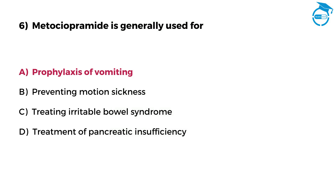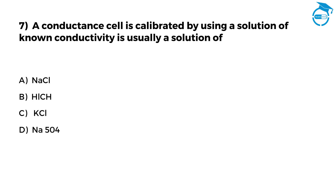Few more questions left. Let's move ahead and take the challenge. A conductance cell is calibrated by using a solution of known conductivity, usually a solution of. Option A, NaCl. Option B, HLCh. Option C, KCl. Option D, NaSO4.